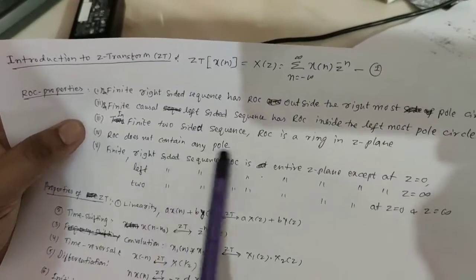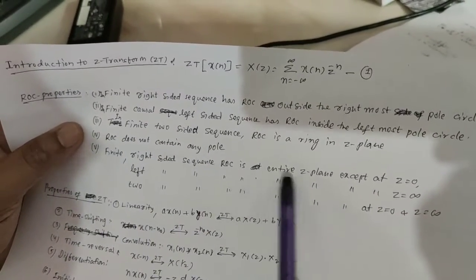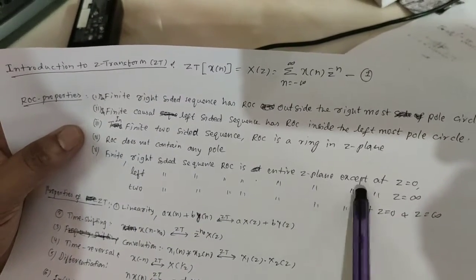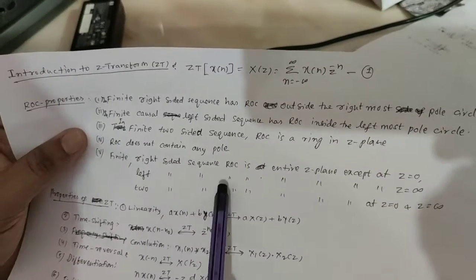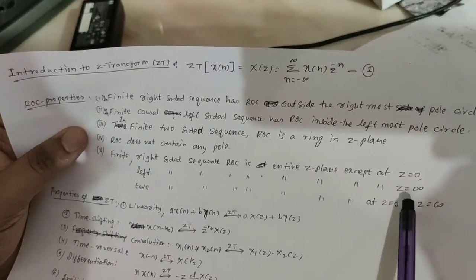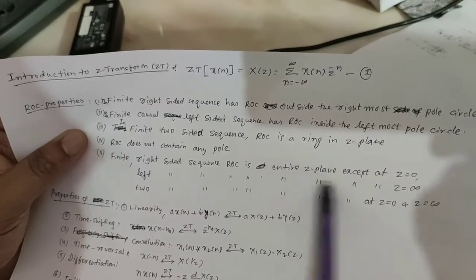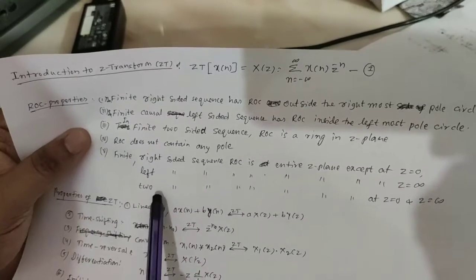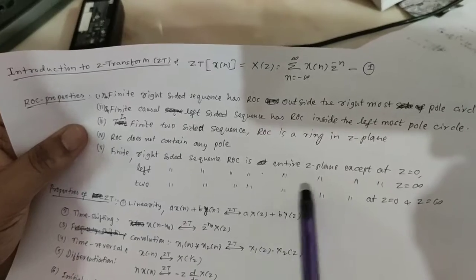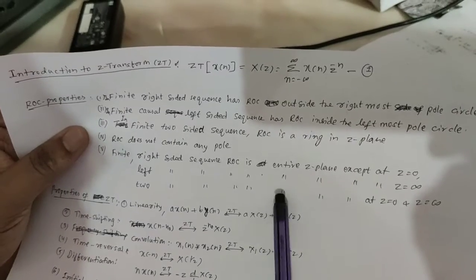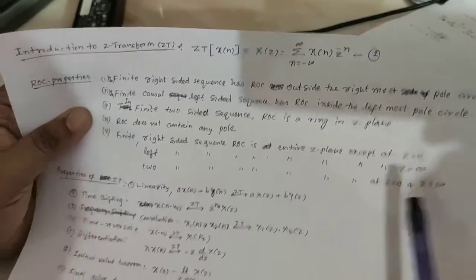ROC does not contain any pole. For a finite right-sided sequence, ROC is the entire z-plane except z equal to 0. For a left-sided sequence, ROC is at z equal to infinity and the entire z-plane. For a two-sided sequence, ROC is the entire z-plane except z equal to 0 and z equal to minus infinity.